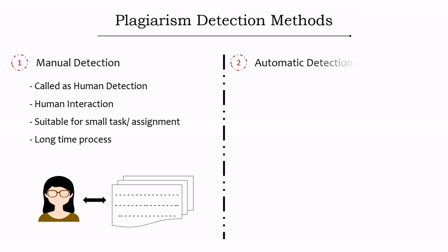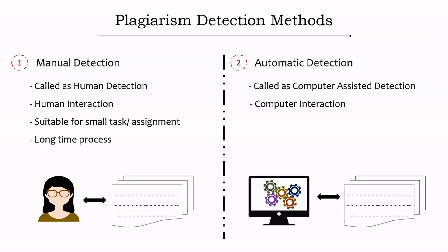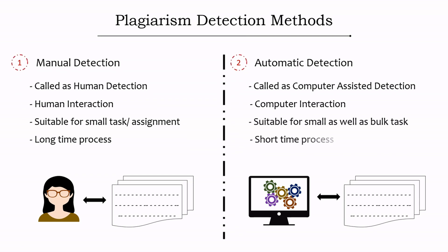To overcome the time delay, the second type — automatic detection — came into existence. Automatic detection is also called computer-assisted detection because the computer does all the jobs. Computer interaction is required, less human effort is needed, it is suitable for both small and large documents, and it checks the originality of a document within a short period of time.